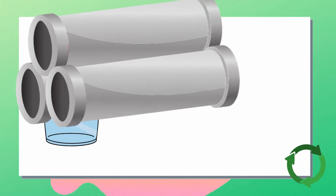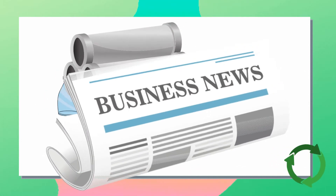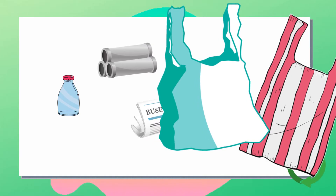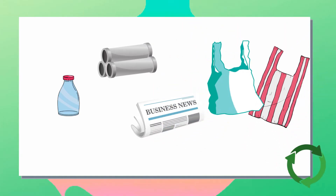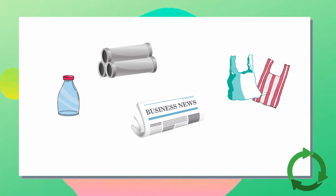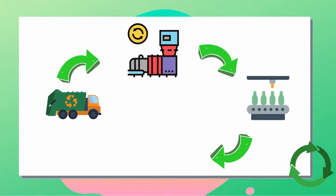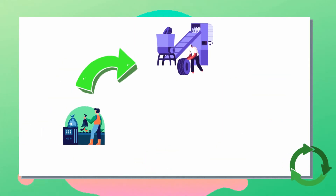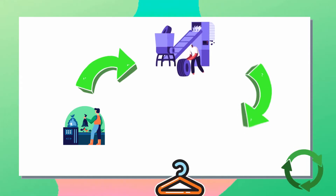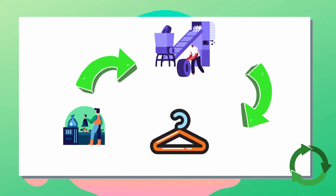In closed-loop recycling, waste materials such as glass, metal, papers, and plastics are used to produce new products of the same type. For example, old glass bottles are recycled into new glass bottles. Down-cycling is done by converting waste materials into different or lower quality products.